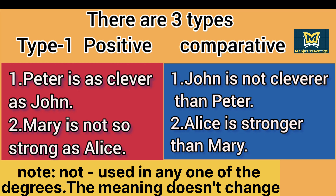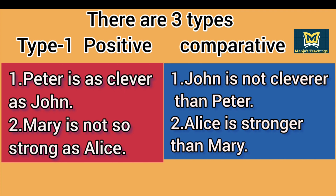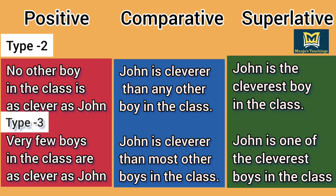In type 2 degrees of comparison, one is compared with many. Example — positive degree: 'No other boy in the class is as clever as John.' Comparative degree: 'John is cleverer than any other boy in the class.' Superlative: 'John is the cleverest boy in the class.'